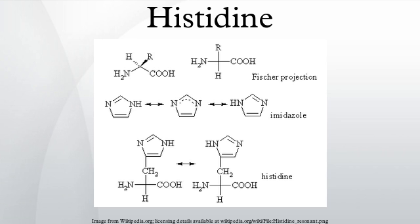Below a pH of 6, the imidazole ring is mostly protonated, as described by the Henderson-Hasselbalch equation. When protonated, the imidazole ring bears two N-H bonds and has a positive charge. The positive charge is equally distributed between both nitrogens and can be represented with two equally important resonance structures.